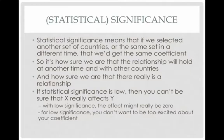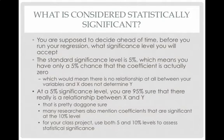If statistical significance is low, you can't be sure that x really affects y. With low significance, the effect might really be zero — there's no relationship. You want a high enough level of statistical significance to be sure your relationship is true. The standard significance level is five percent, meaning there's only a five percent chance the coefficient is really zero. At the five percent significance level, you are 95 percent sure there really is a relationship between x and y.